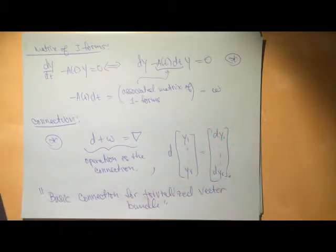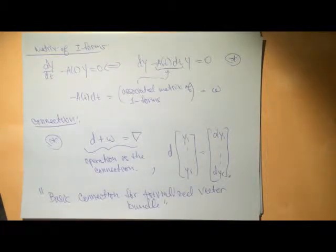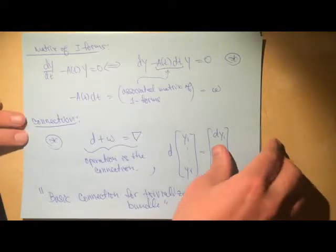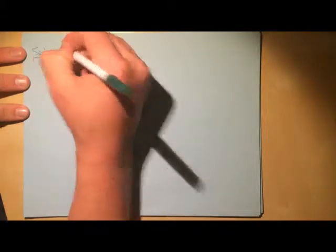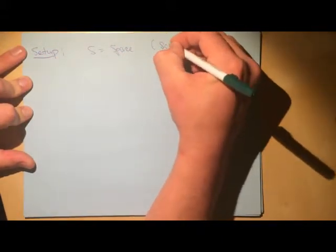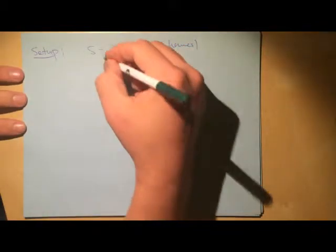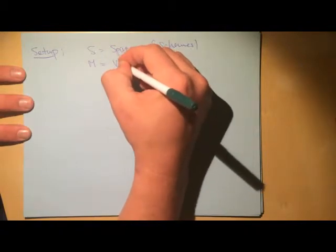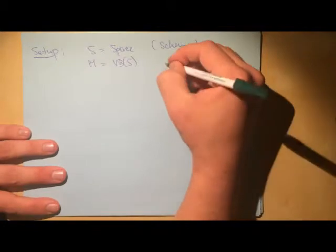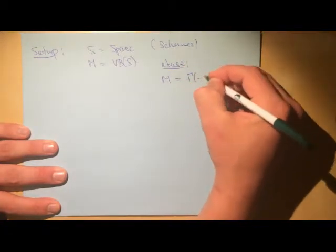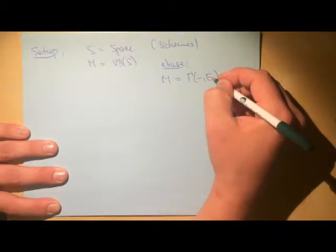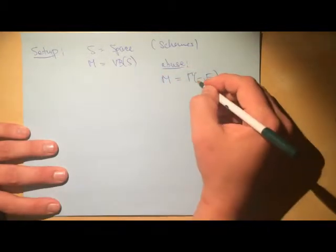When we give a connection, we're really specifying a bunch of local systems of differential equations. Now I can state the actual definition. The ingredients are: S is a space — in our case we're interested in schemes, but you might think of manifolds — and M is a vector bundle on S. M is really the sections of a physical vector bundle sitting over S.